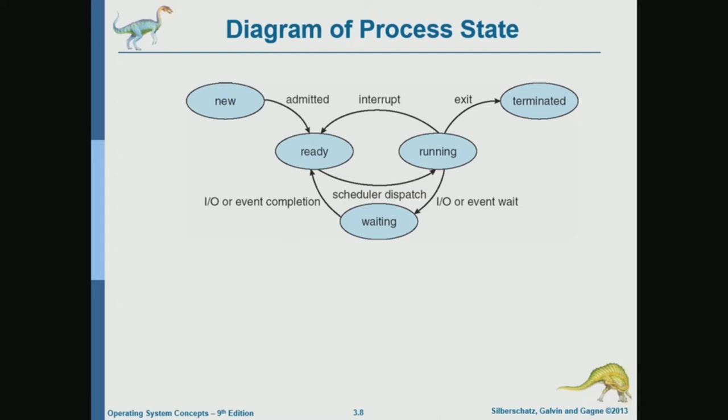But other processes are ready. And there is a limited number of CPUs, possibly one CPU, or maybe two or four CPUs. But there are 10 or 20 processes in the system. So the scheduler will be selecting one process for each CPU. On each CPU, there will be one process that will be run on that CPU. And when a process is selected by the scheduler, the state of that process will change from ready to running.